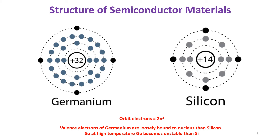Normally for semiconductor materials, the outermost orbit electrons will be equal to 4 only. The same applies for silicon as well.